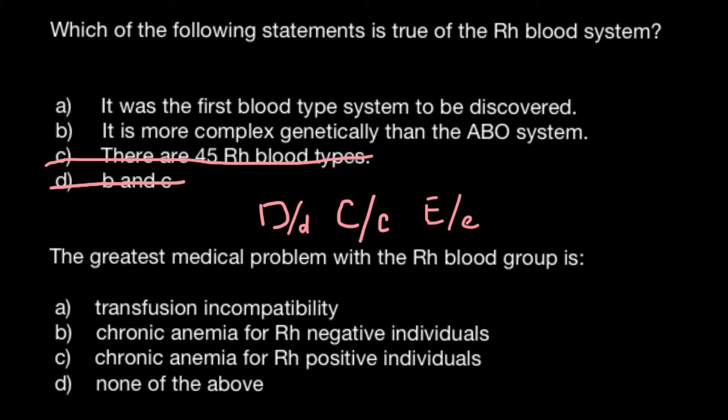We're left with two answers now. Answer A: it was the first blood type system to be discovered. This is not true because the ABO blood group system was discovered in the beginning of the 20th century, in 1900, and Rh positive and negative blood grouping were discovered in 1940.